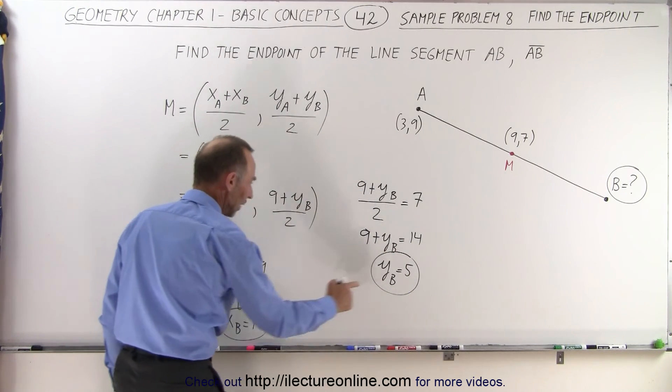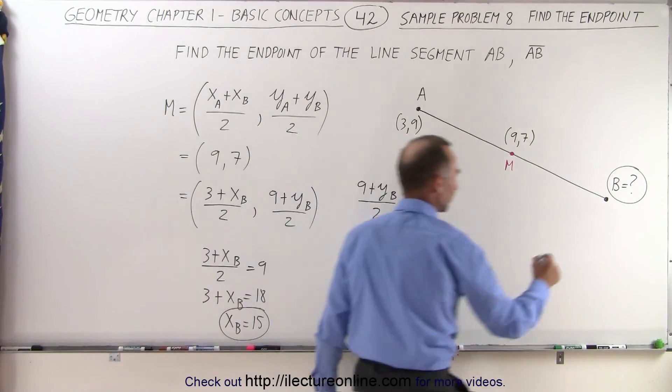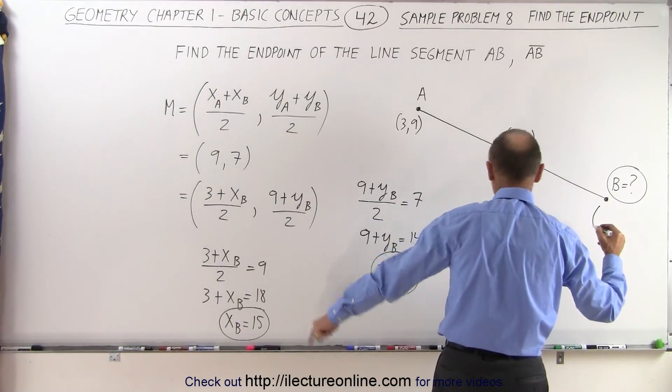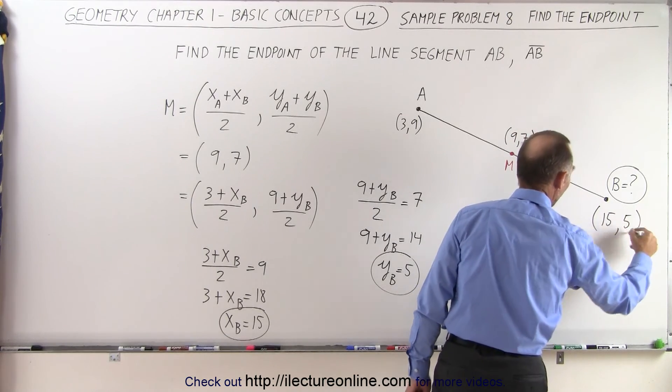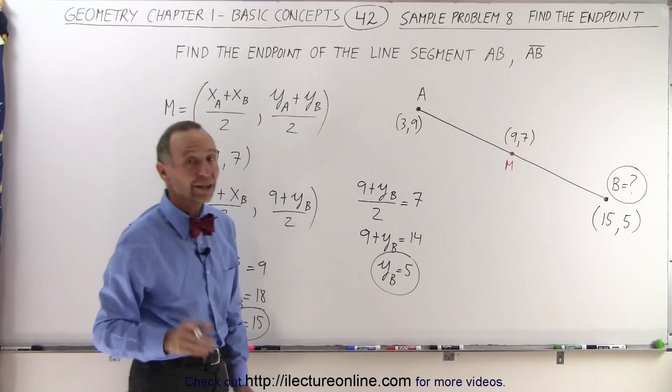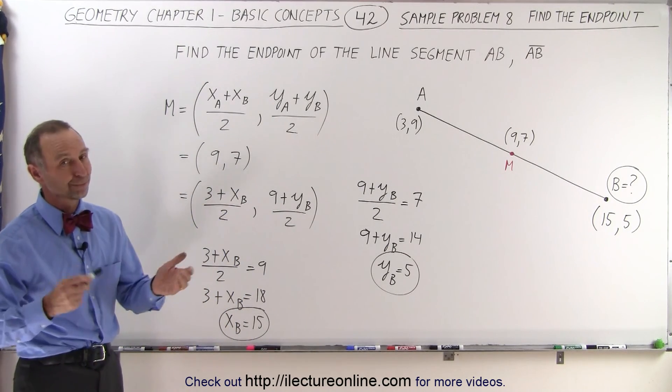We now have the x and y coordinate of the other endpoint, so we can plug that in. And so we can say that this has a coordinate x equal to 15 and coordinate y equal to 5. And that's how you find the other endpoint if you're given the first endpoint and the midpoint. That's how it's done.